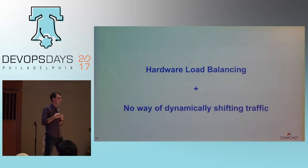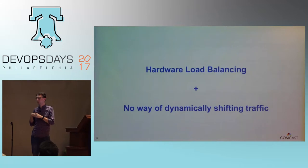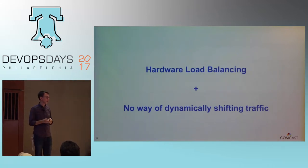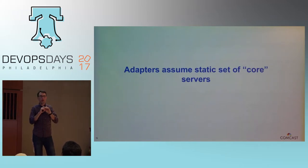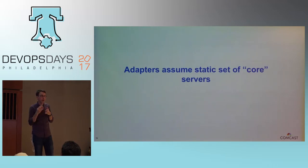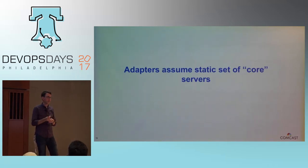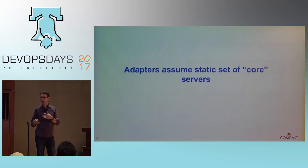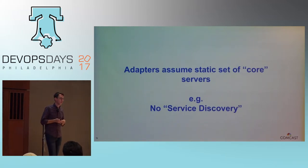For load balancing, we had hardware load balancers with no dynamic way of shifting traffic — we had to put a ticket in, wait, or do it manually if we had problems with clients or wanted to take a data center offline. The adapters I mentioned at the beginning assumed a static set of servers — you could add new ones, but you could never take away old ones. The assumption was that IPs or ports would never change, so if a server went down, clients assumed they could reconnect within 10-15 minutes. We couldn't scale those servers up or down without restarting the application and making configuration changes. No service discovery.